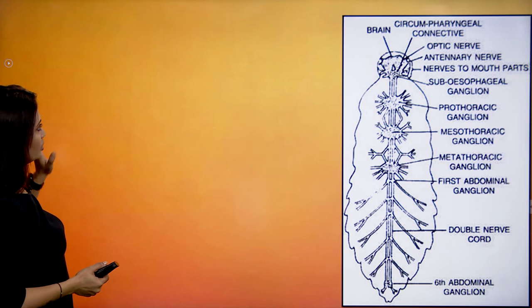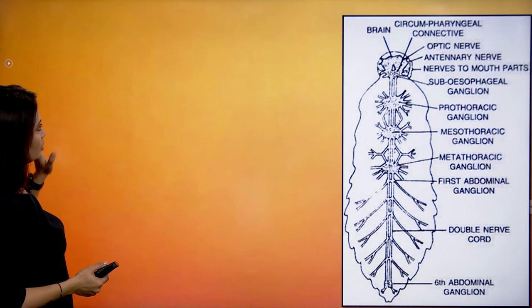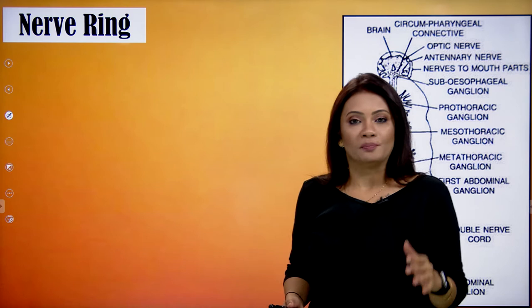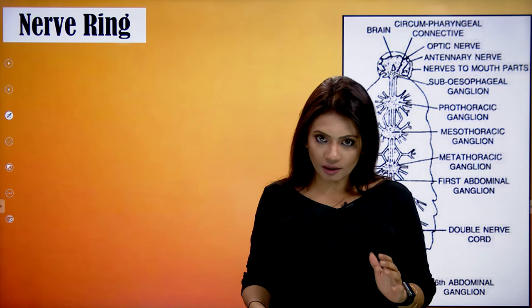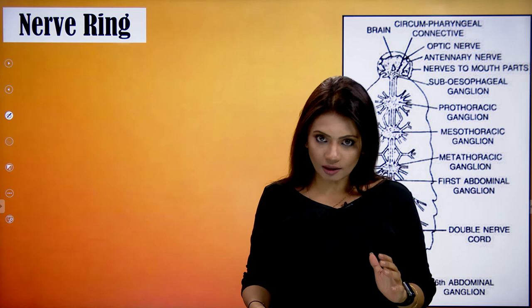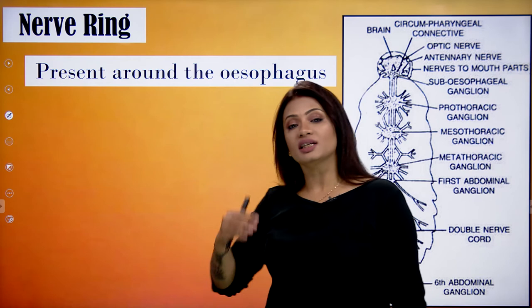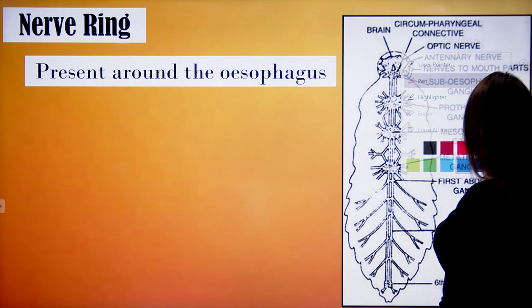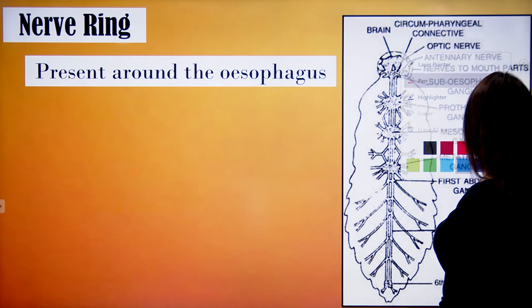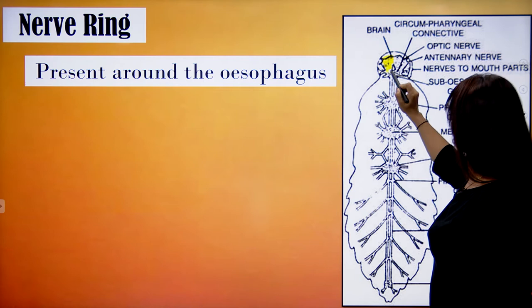Starting with the whole nervous system, we begin with the nerve ring. If it is called a nerve ring, there must be a structure appearing like a circle. This nerve ring is situated in the head region of the cockroach. It is exactly the part present around the esophagus in the head.